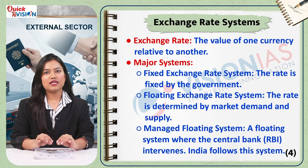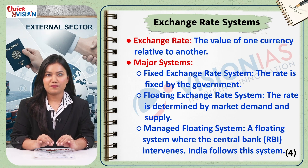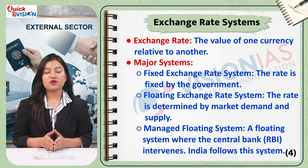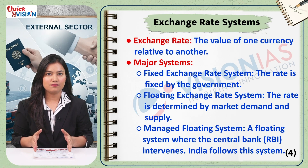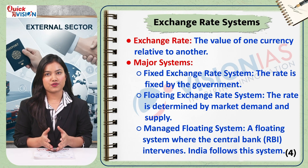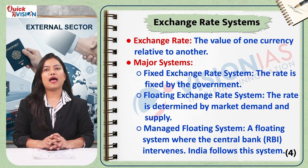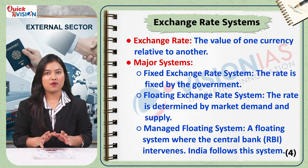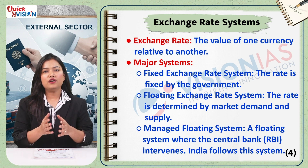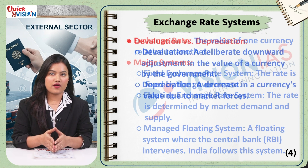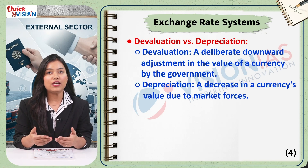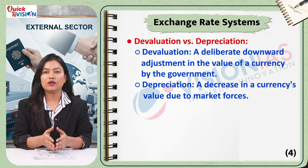The exchange rate is the price of one currency in terms of another. There are three main systems. In a fixed exchange rate system, the government or central bank fixes the exchange rate. In a floating exchange rate system, the rate is determined by the market forces of demand and supply. The third is the managed floating system, where the central bank intervenes in the foreign exchange market to influence the rate — India follows this system. When the government reduces the value of its currency, it is called devaluation, and when the value decreases due to market forces, it is called depreciation.